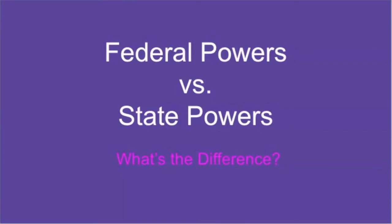Hi, students. Today we're going to talk about federal powers versus state powers — what's the difference? When I talk about federal, I mean national: things that the entire nation, or the federal government, is responsible for. And when I talk about state powers, I am talking about individual states like Maryland, Virginia, and California, and what they can actually do in our government.